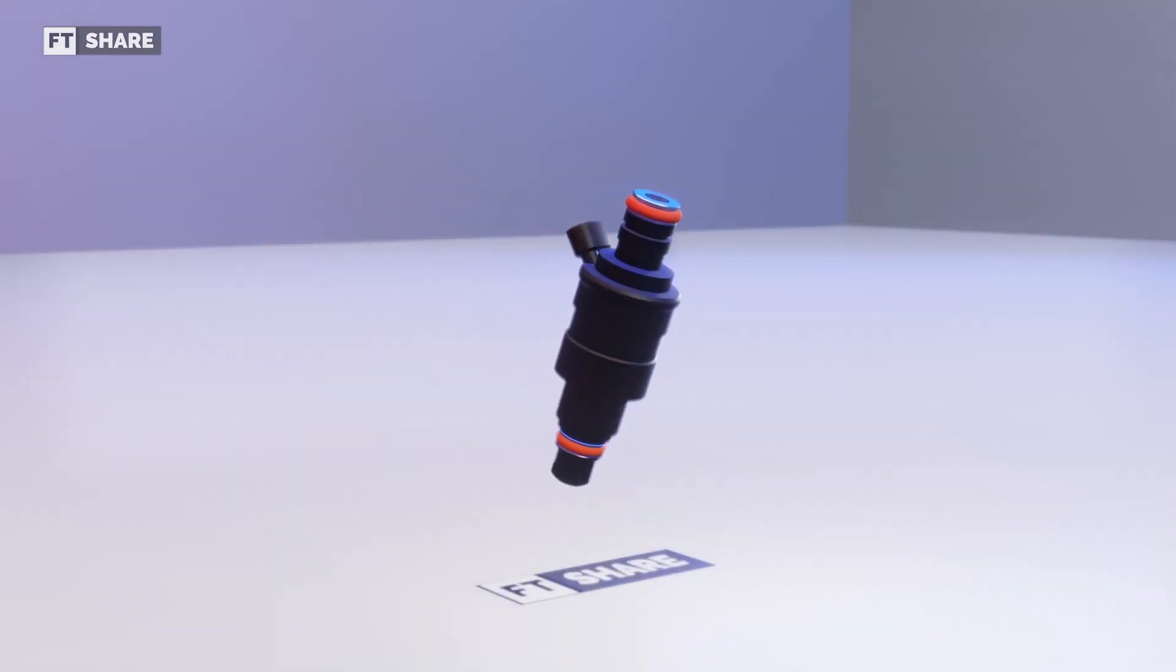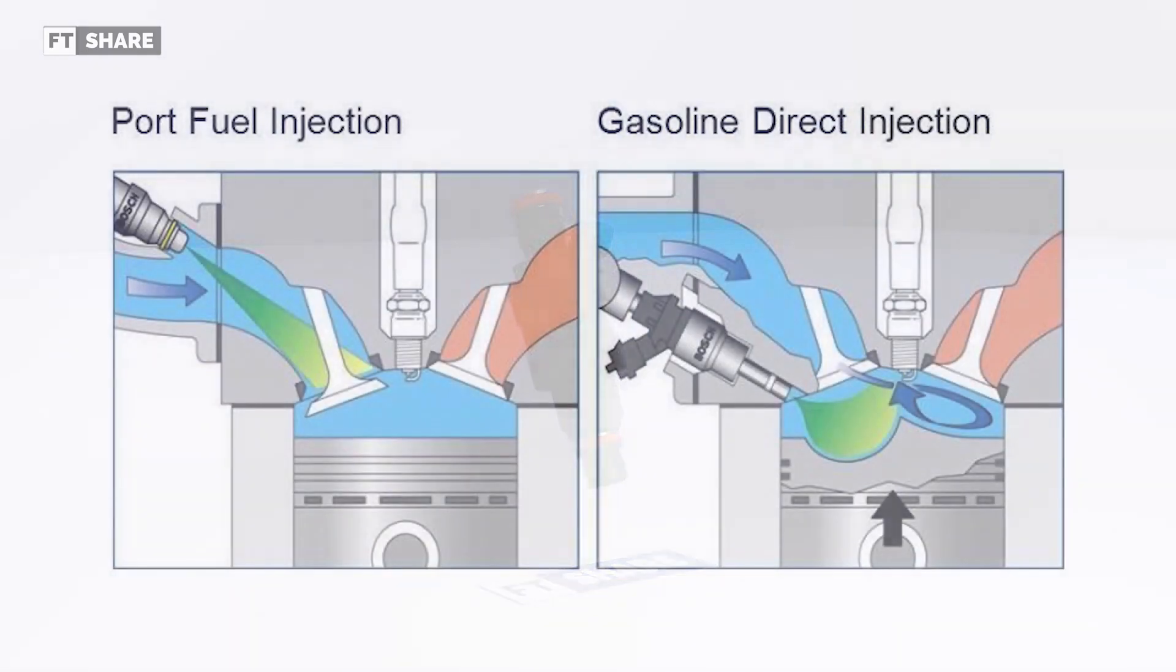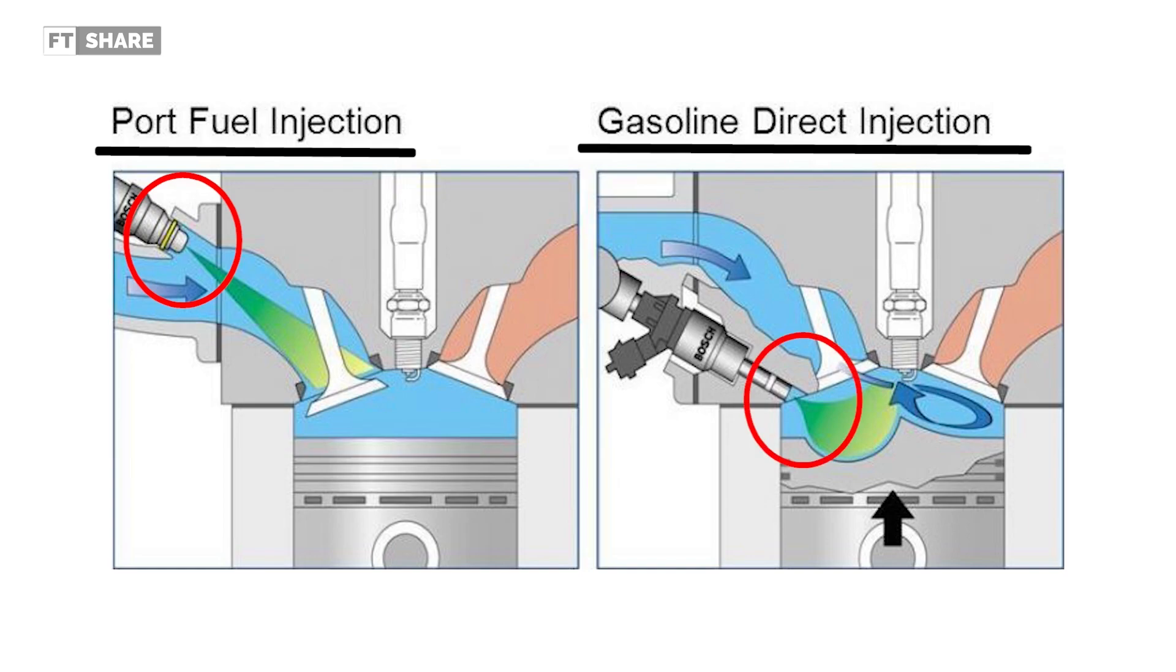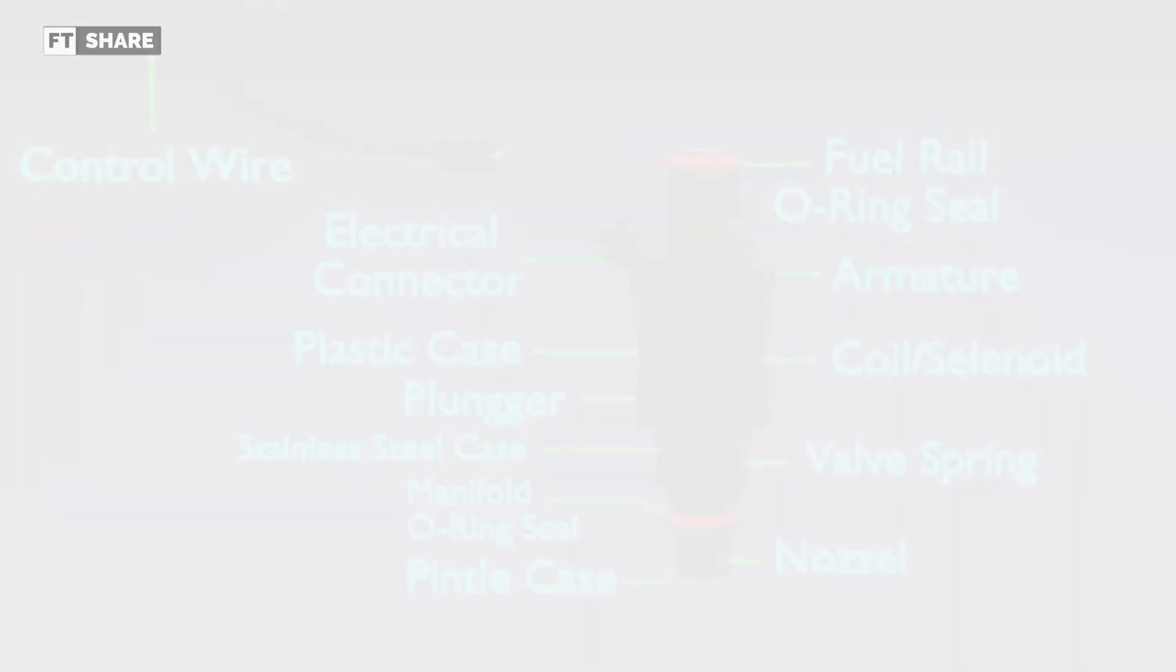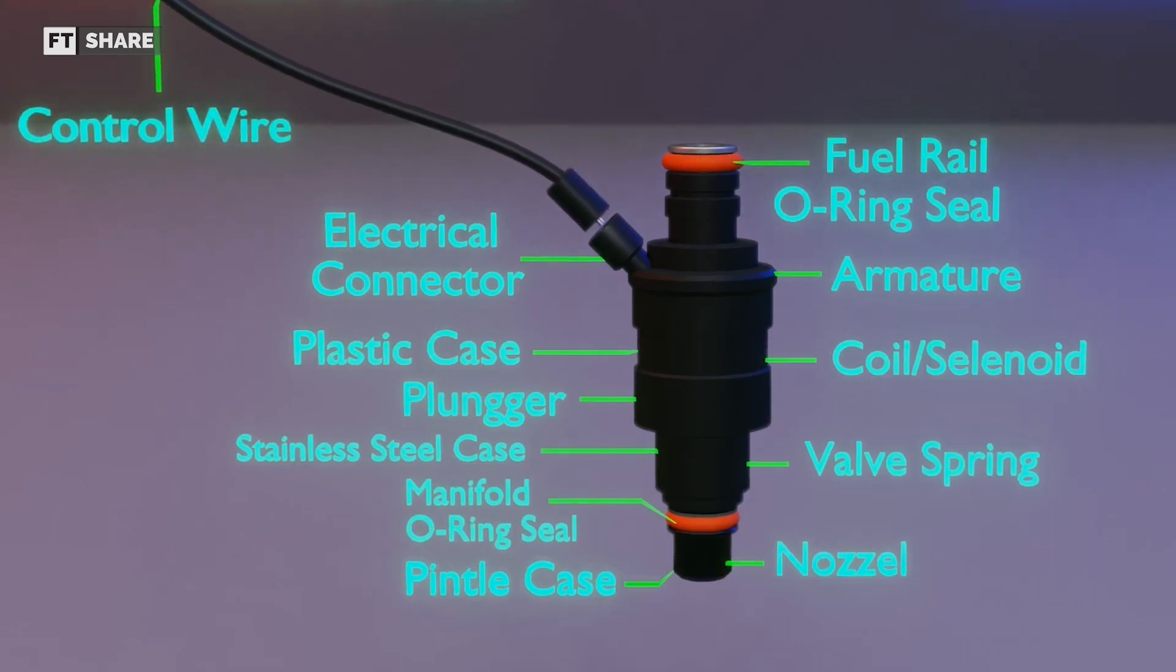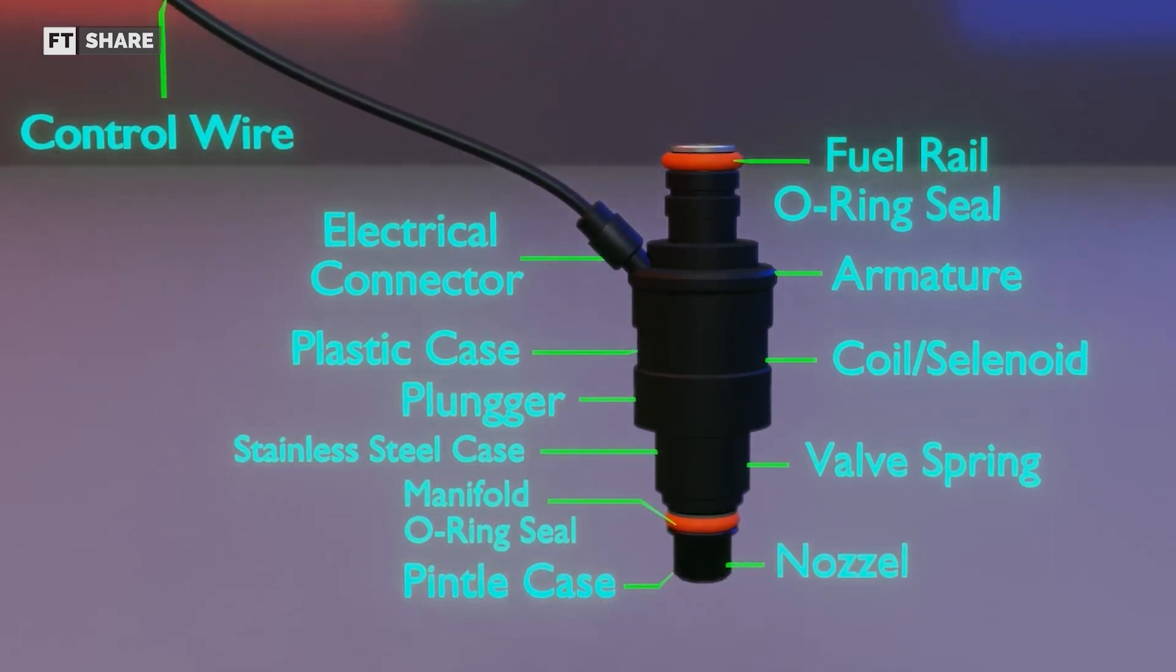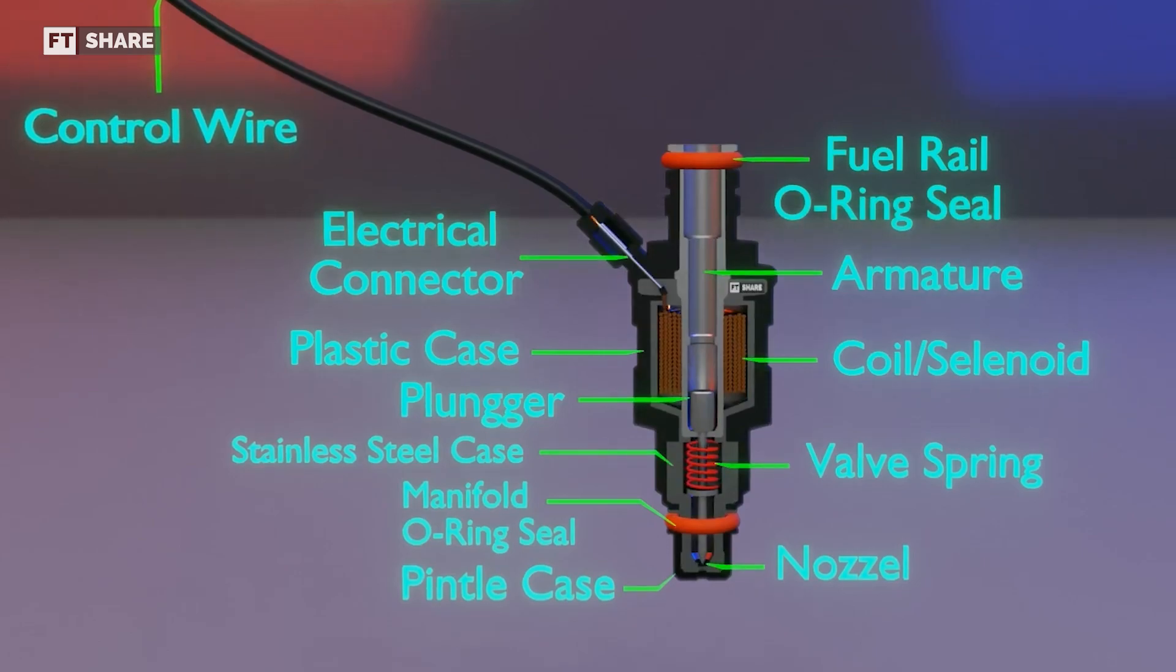As we said before, there are two types of injections spread in the market today, namely indirect injection and direct injection. But basically, these two types of injections still have identical working parts and mechanism, starting from the nozzle, plunger, valve, valve spring, coil, control wire, and housing, which is divided into two, namely plastic housing and stainless housing.